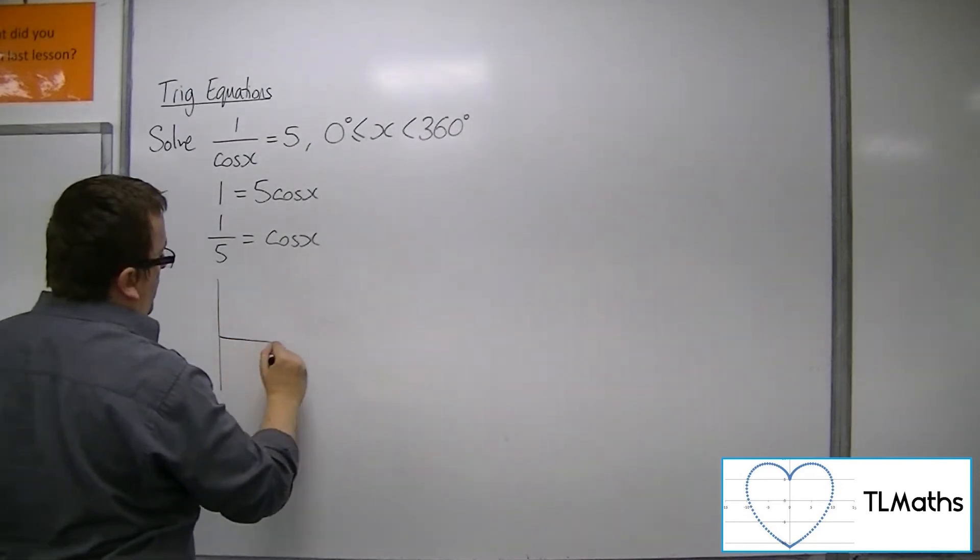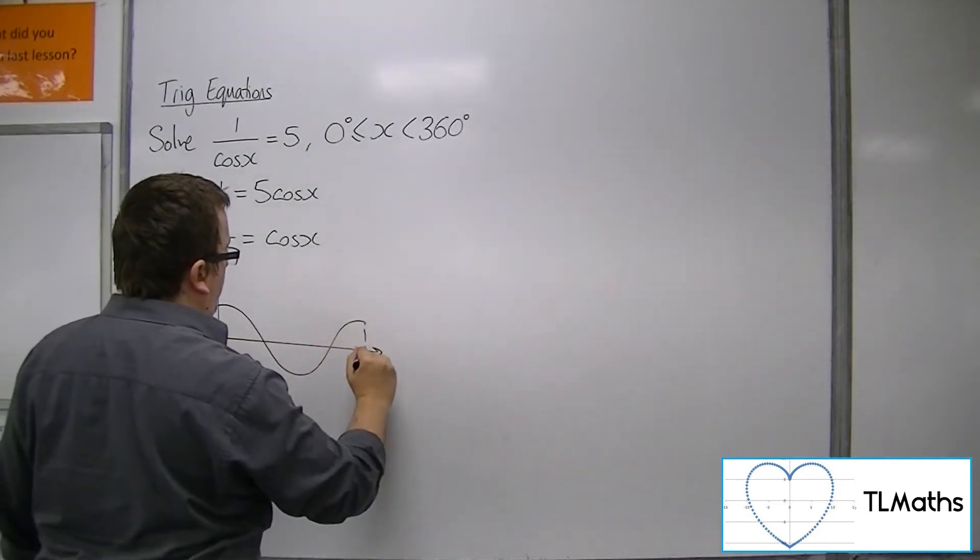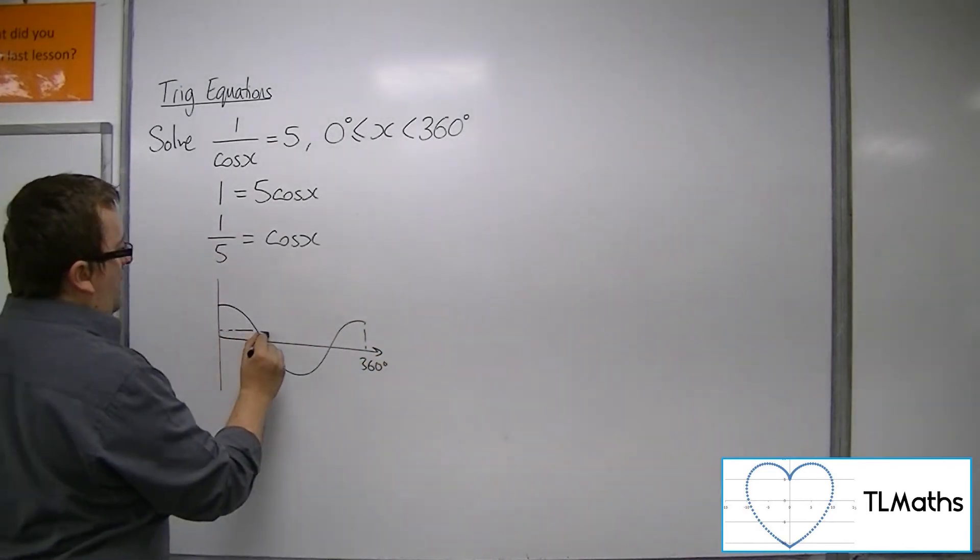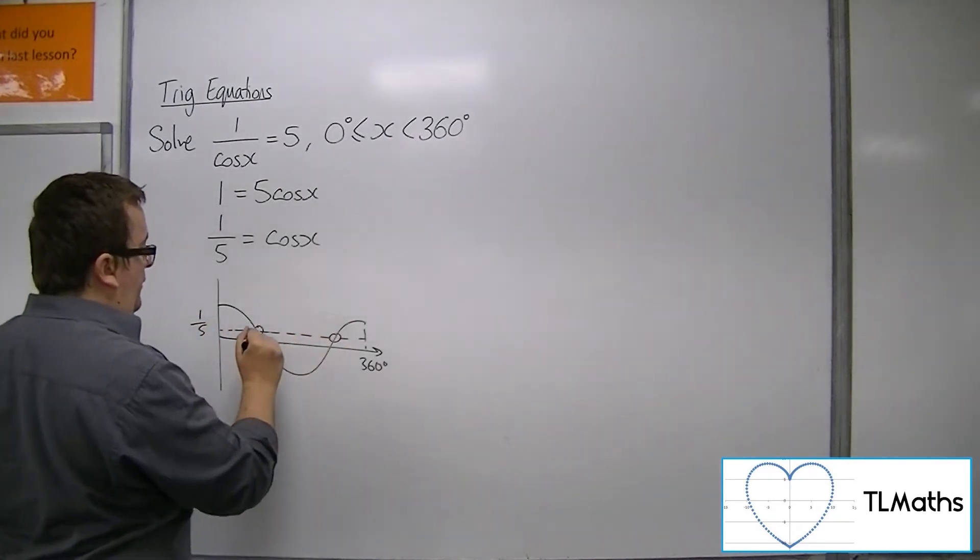So a quick sketch of cosine between 0 and 360 - 1 fifth is going to intersect twice. So there are two solutions.